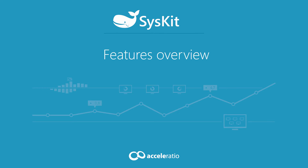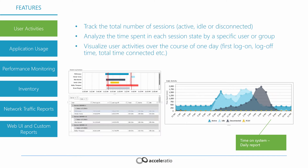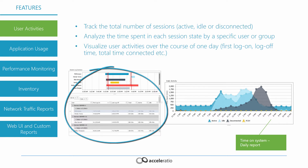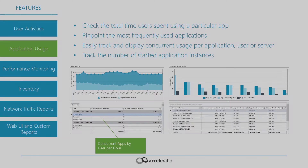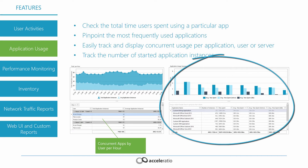Let's take a look at the features of the software. User Activities allows you to track the time spent in each session by a specific user or security group. You can easily see log-on time, log-off time, total time connected, whether the user was active or idle, and more. Application Usage allows you to check all the apps that were used by the users on the farm. You can pinpoint the most frequently used applications, who executed what application, and when.